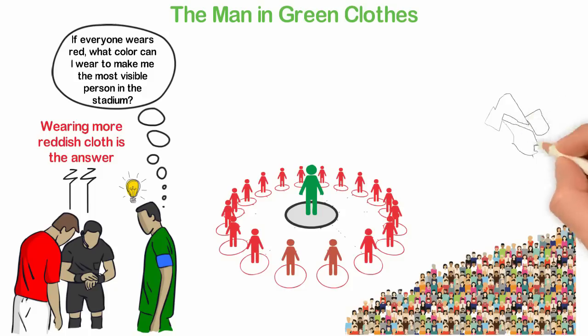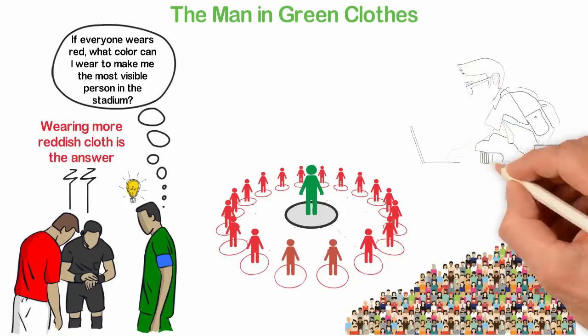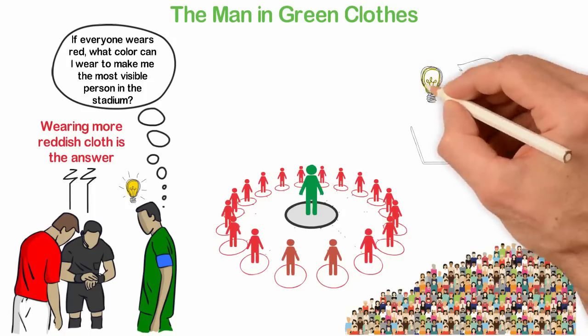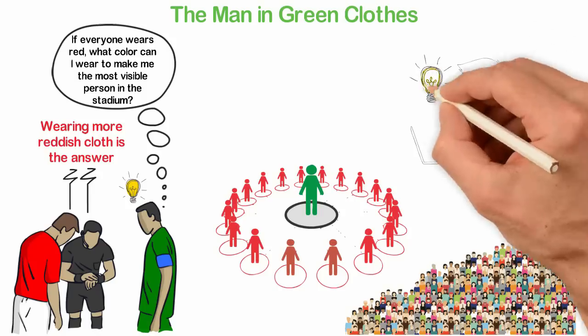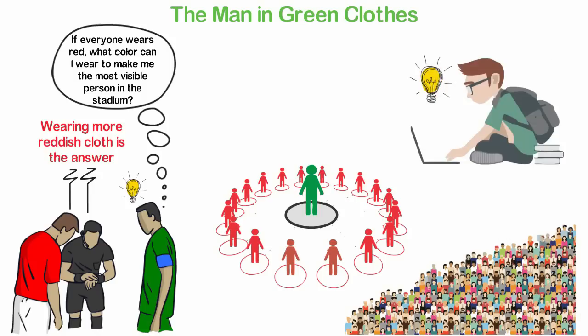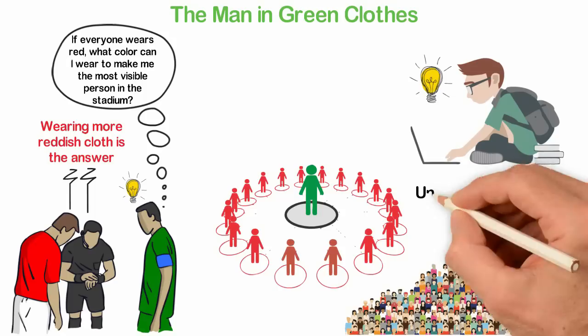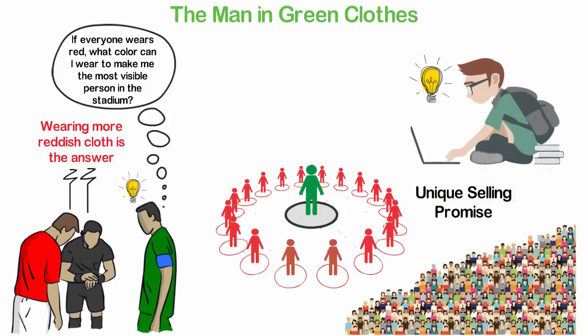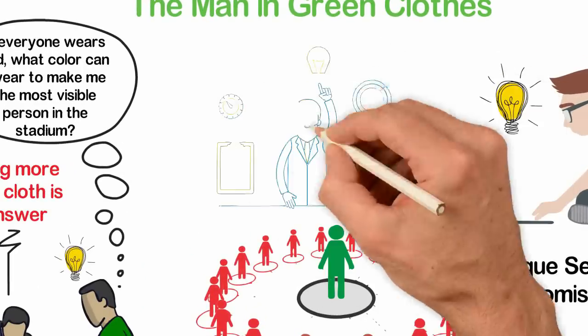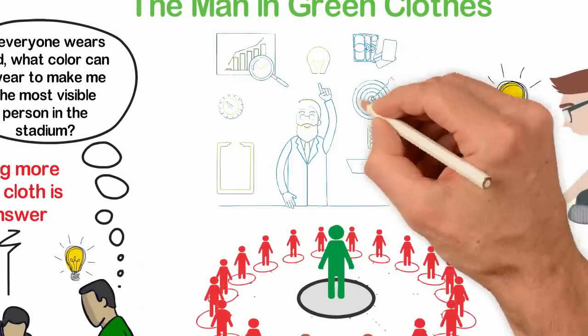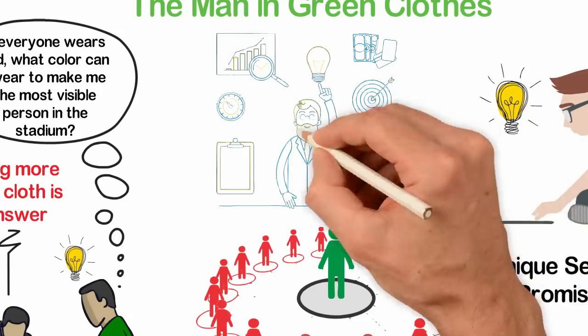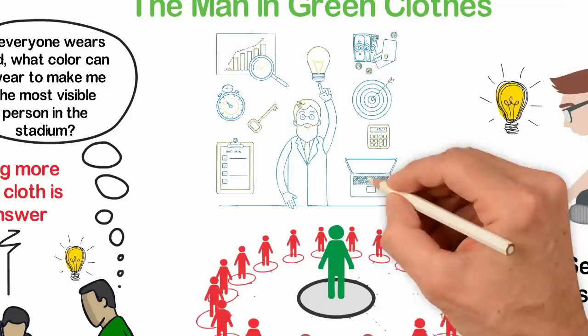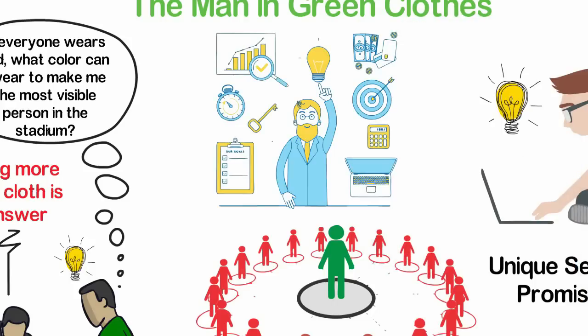When people are starting businesses, oftentimes they are like those two individuals who wear more reddish clothes. I'll confess to you, I was like that too until 2007 when I learned the secret of the green clothes from Brian Sher. Some people call it unique selling proposition while Brian Sher calls it unique selling promise. It simply means that you can't become successful as an entrepreneur by wearing more reddish clothes. You can't become successful by trying to outdo everyone. You can't become successful by competing. You can only become successful by creating.